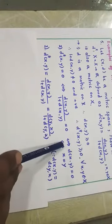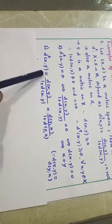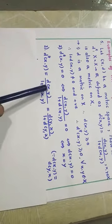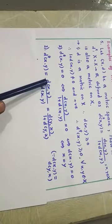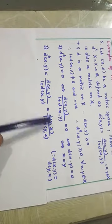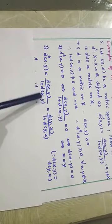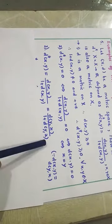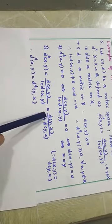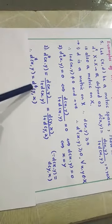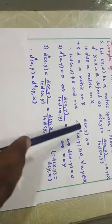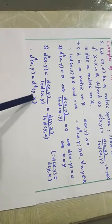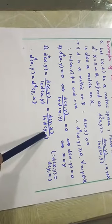Third condition: D*(x,y) = D(x,y)/(1+D(x,y)). Since D is a metric, D(x,y) = D(y,x). So we write D(y,x)/(1+D(y,x)), which by definition is D*(y,x). Therefore D*(x,y) = D*(y,x) for all x, y belonging to X.